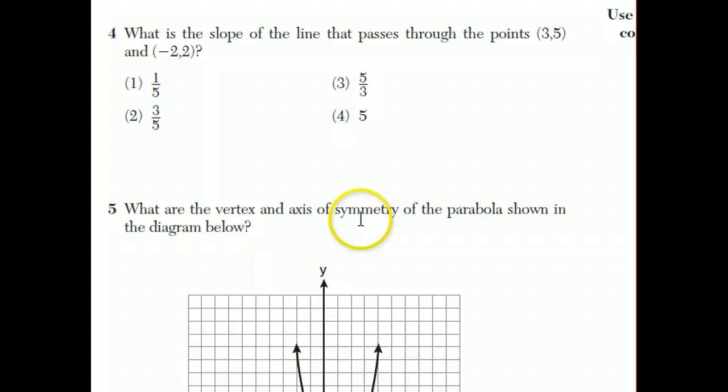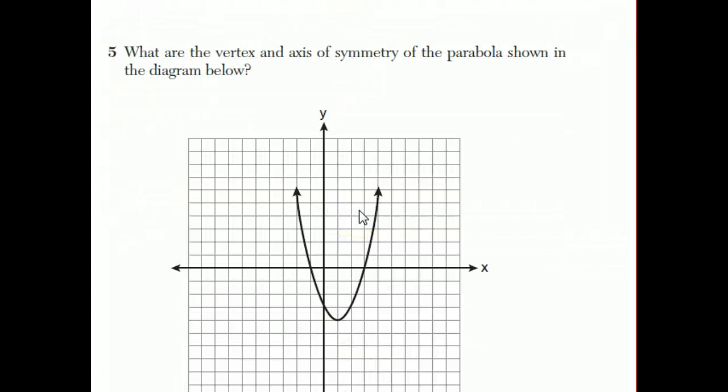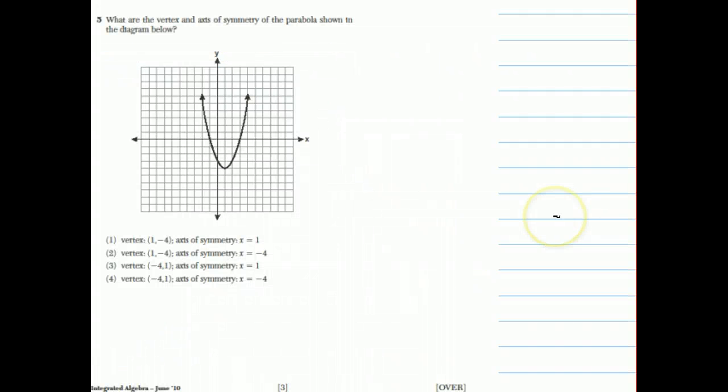Moving on to question number 5. It says, what are the vertex and axis of symmetry of the parabola shown in the diagram below? Well, the vertex of a parabola is the low point of it, or the high point if it's a parabola that's frowning. But otherwise, if it's a smiling parabola, this is at the low point. So the location of this point is, we count to the right, 1 to the right, and 1, 2, 3, 4 down. Which is why the vertex is 1 negative 4.